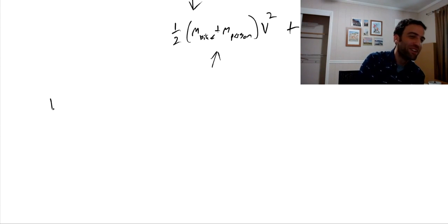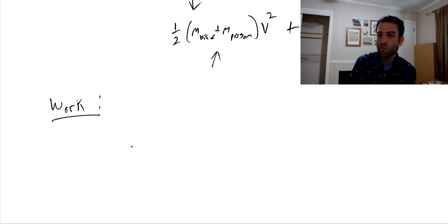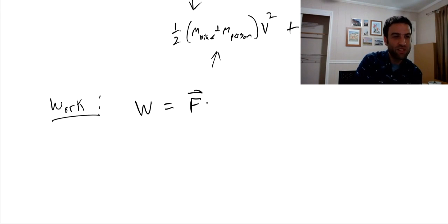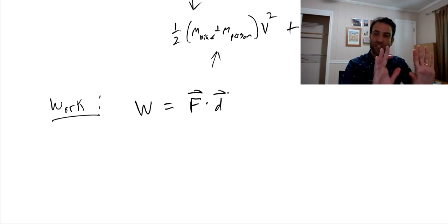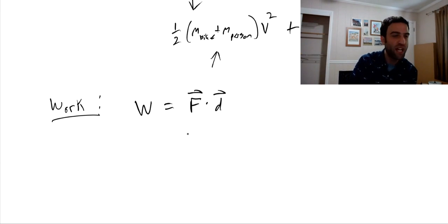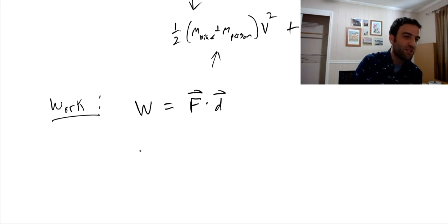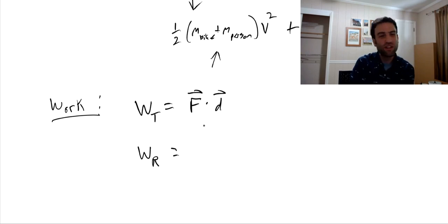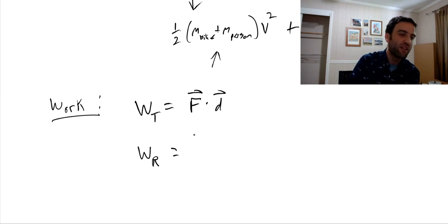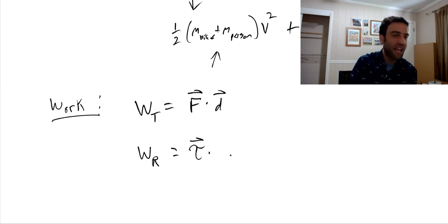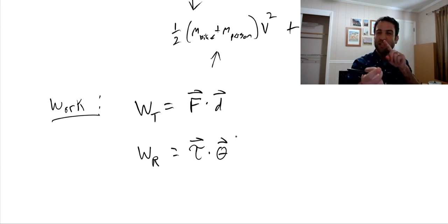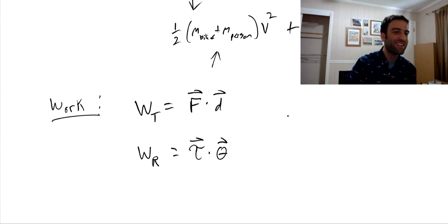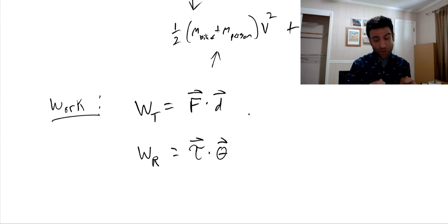For translational motion, work equals the vector force dotted into the displacement — force over a distance. For rotational work, we've defined everything so the expression looks the same: the angular equivalent of force is torque, and the angular equivalent of distance is how much we've rotated. So just as exerting a force over a distance does work, exerting a torque through a rotation does work. And just as exerting a force on an object that isn't moving does no work, exerting a torque on an object that isn't rotating does no work.